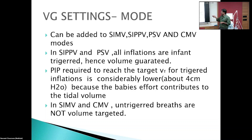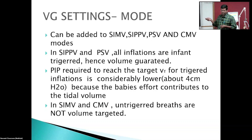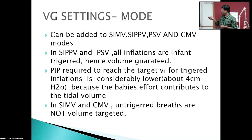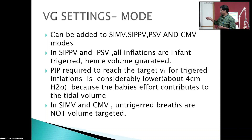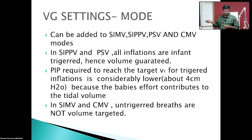The basic modes compatible with volume guarantee are SIMV, SIPPV, PSV, and CMV. In SIPPV and PSV, all breaths triggered by the baby will be supported by the ventilator, making these ideal modes to add VG. The PIP required to reach the target volume for each triggered inflation is about 4 cmH₂O lesser than non-triggered inflations, because the baby's effort contributes to achieving the targeted tidal volume.